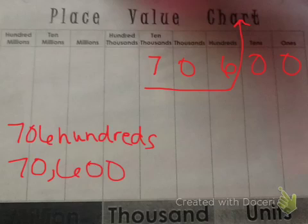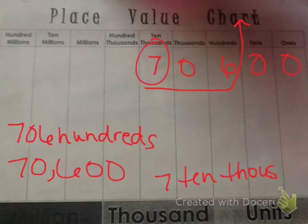Now name the numbers individually. I have 7 ten thousands and 6 hundreds.